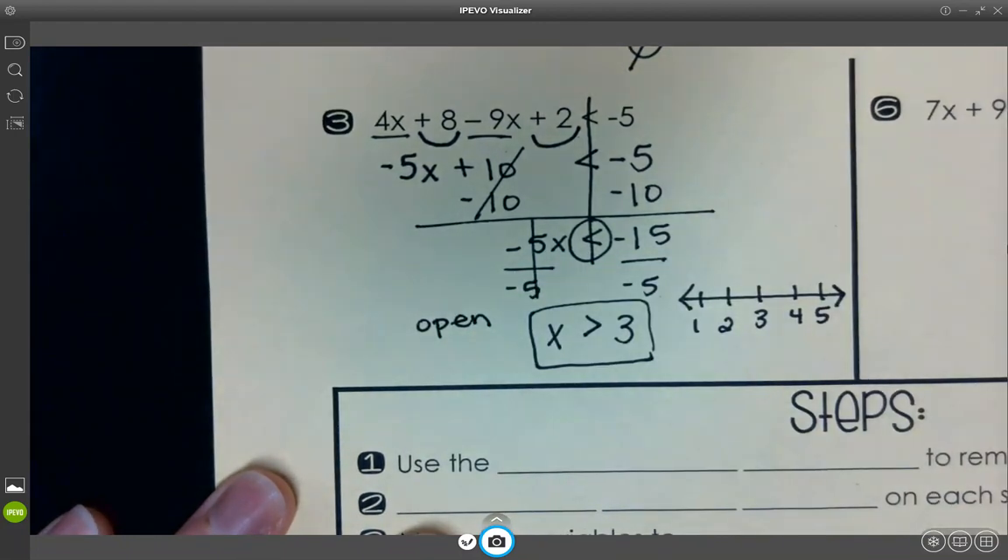It's going to be greater than. It's not a greater than or equal to, so it's an open circle. It's going right. Then in interval notation, it's going from 3 to infinity. It's not an or equal to, so it's parenthesis 3 to infinity with parenthesis around it.